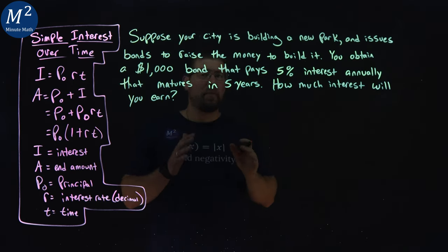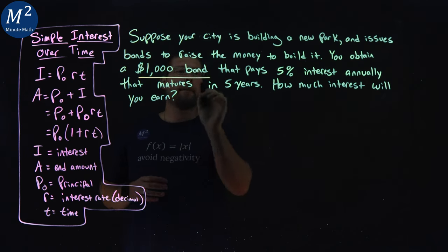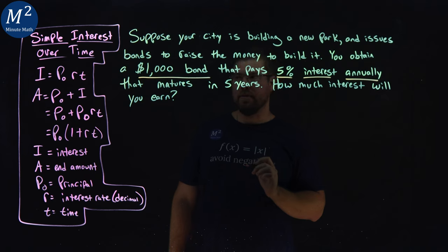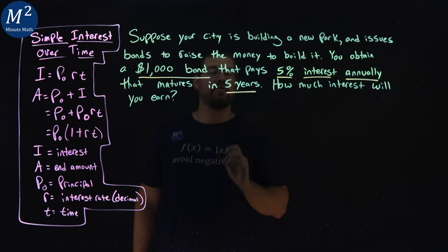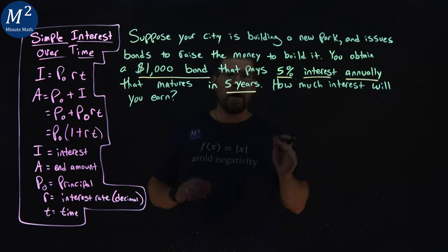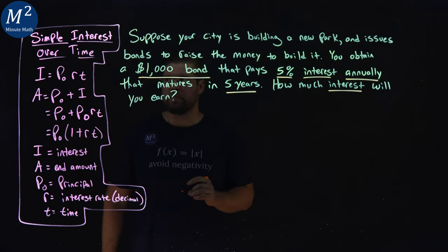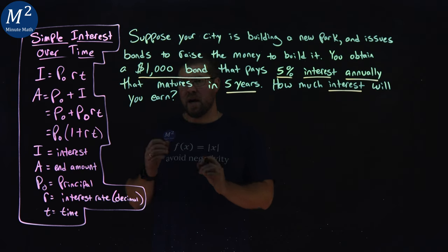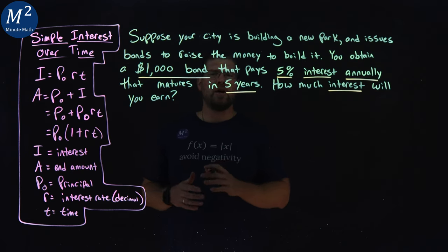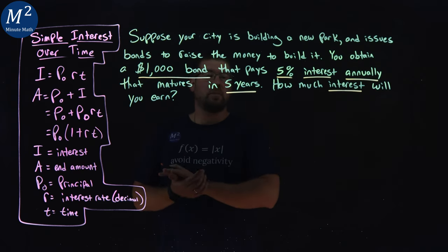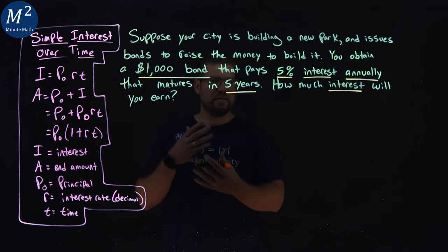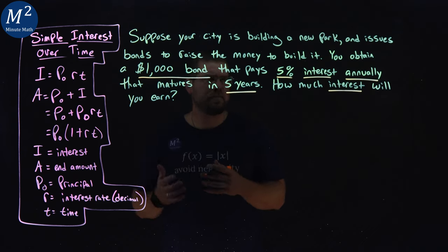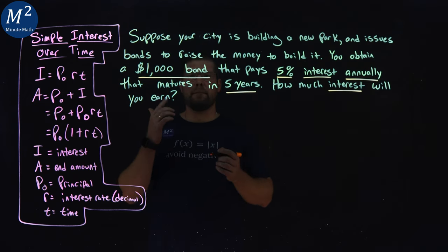Let's get the key parts here. It is a $1,000 bond that pays 5% interest annually and it matures in 5 years. How much interest will you earn? This is simple interest over time. The way the bonds work is you're going to get paid 5% of the initial bond amount every year, but you don't lump it back into the original amount. It's not compounding. So let's get our key parts here.